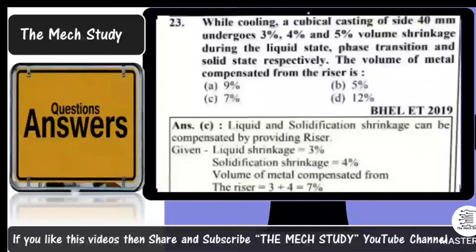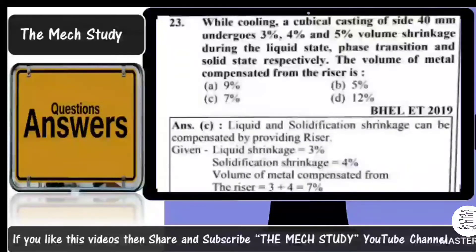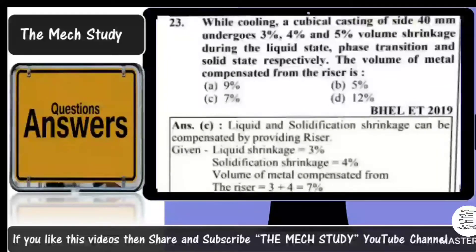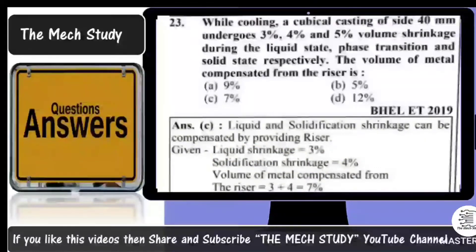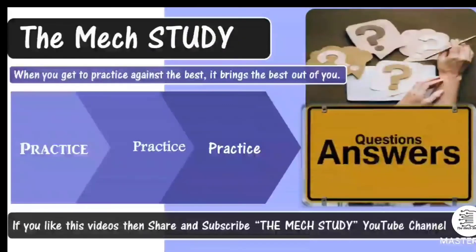Basically, after solidification the product has reduced in size. You need to calculate the contraction compensated by the riser — how much material the riser sends to the mold to compensate for shrinkage. There are three types of shrinkage given, but only liquid shrinkage (3%) and solidification shrinkage (4%) are compensated by the riser. Volume shrinkage (5%) is not. So total shrinkage compensated by the riser equals 3 + 4 = 7 percent.